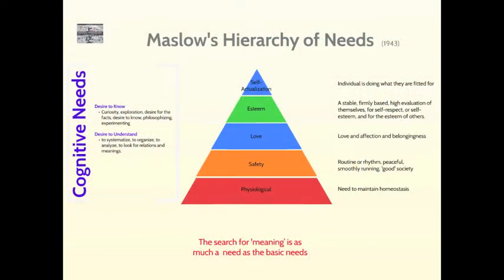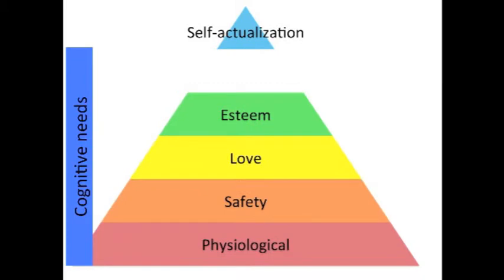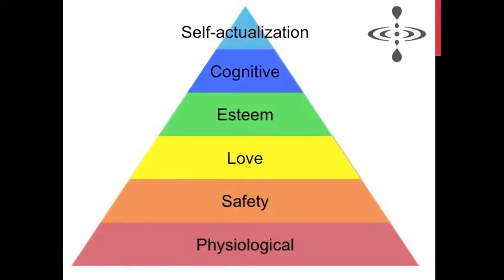Here we see the cognitive needs added at the side. Maslow thought that two key needs were our desire to know — curiosity and exploration — and then the second cognitive need: our desire to understand, to synthesise and organise information. Just like the other needs, these ones develop from each other; knowing develops into understanding. It wasn't until a little bit later that Maslow incorporated the cognitive needs into the pyramid, placing them above the esteem needs. This has big implications because the physiological, safety, love, and esteem needs all have to be present before knowing and understanding — they all have to be present before academic skills can be developed.